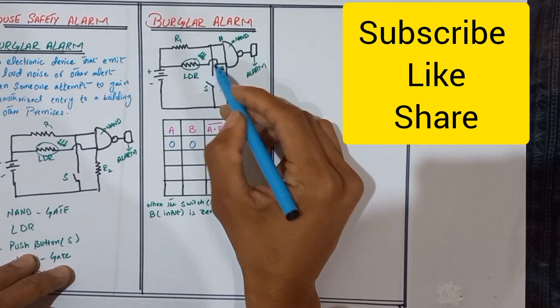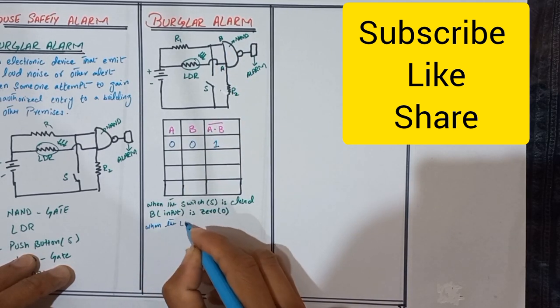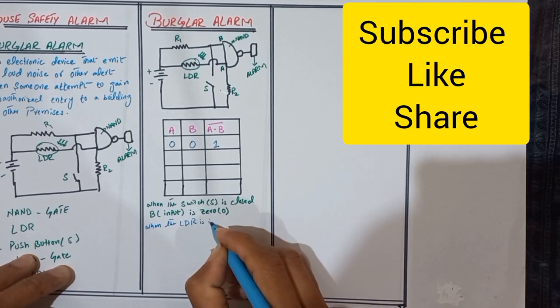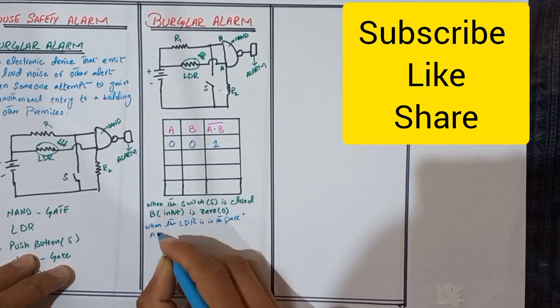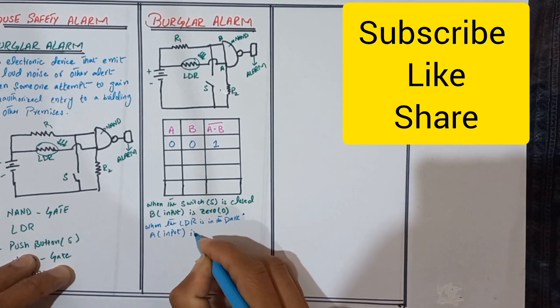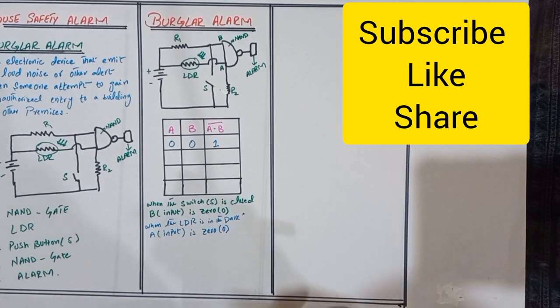When the LDR is in the dark, A input is zero. So in output we get one.